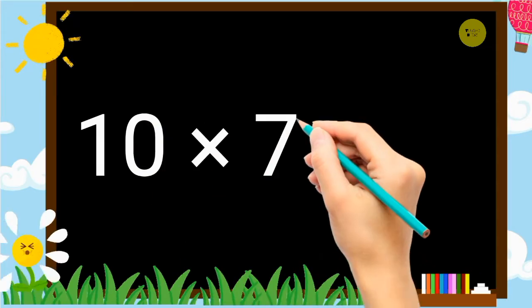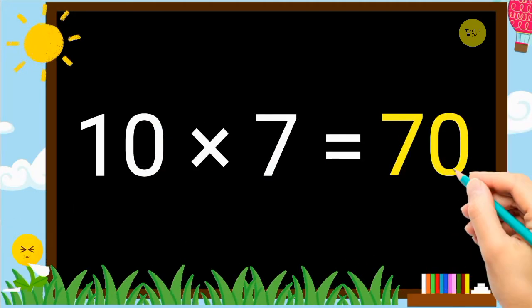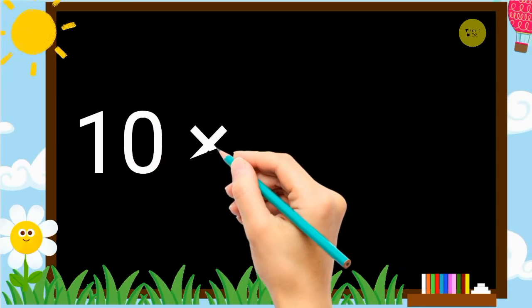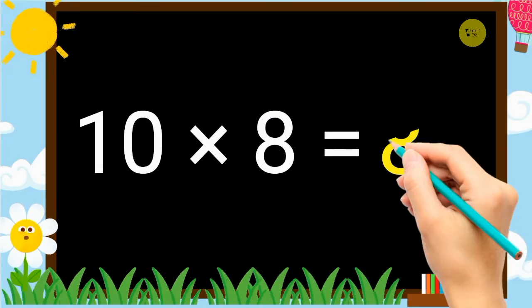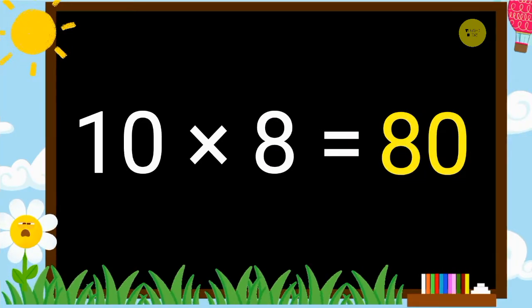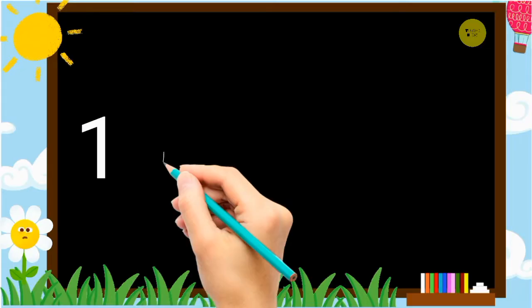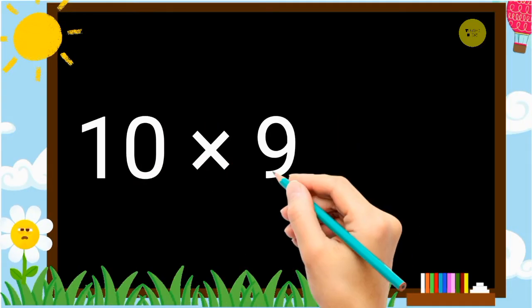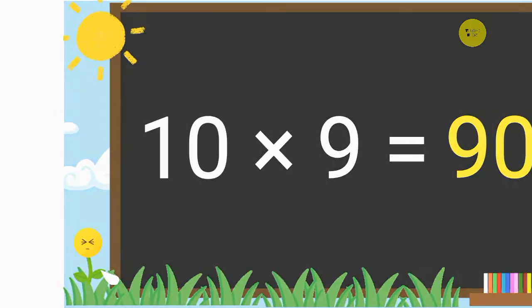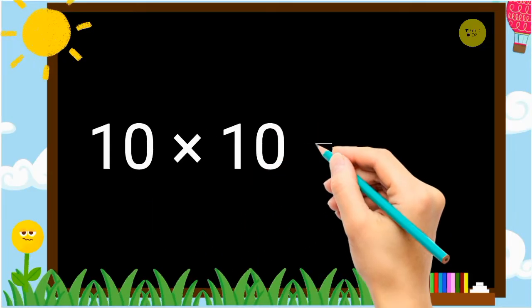10 7's are 70. 10 8's are 80. 10 9's are 90. 10 10's are 100.